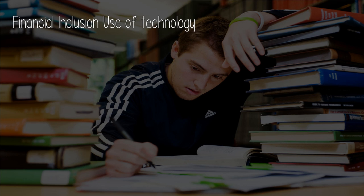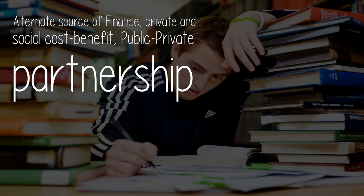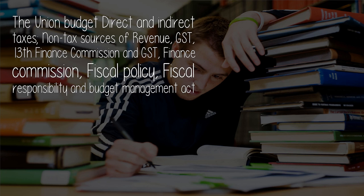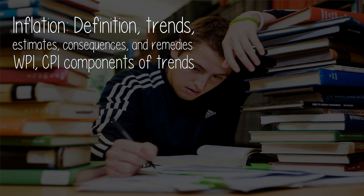Financial inclusion and use of technology. Alternate sources of finance, private and social cost-benefit, public-private partnership. Corporate governance and banking sector, role of e-governance in addressing corruption and inefficiency in the government sector. The union budget: direct and indirect taxes, non-tax sources of revenue, GST, 13th Finance Commission and GST, Finance Commission, fiscal policy, fiscal responsibility and budget management act. Inflation: definition, trends, estimates, consequences and remedies, WPI, CPI, and components of trends.